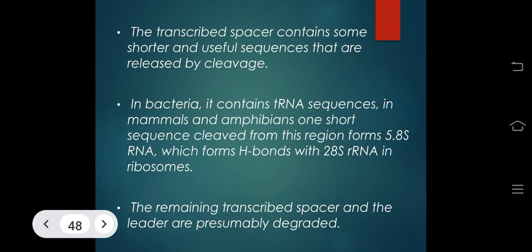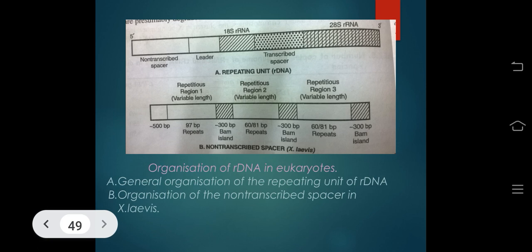The transcribed spacer contains shorter sequences released by cleavage. In bacteria it contains tRNA sequences. In mammals and amphibians, one short sequence cleaved from this region forms 5.8S rRNA, which forms hydrogen bonds with 28S rRNA in ribosomes; the remaining transcribed spacer and leader are degraded. The general organization of the rRNA repeating unit includes the non-transcribed spacer, the transcribed spacer, a leader, and the mature rRNA sequences.